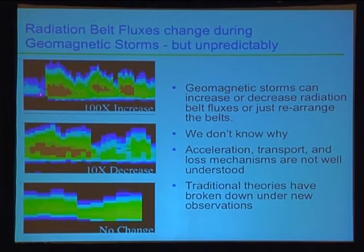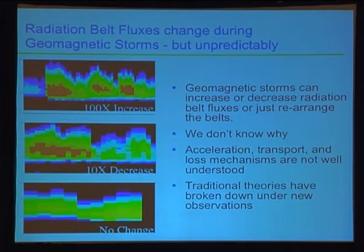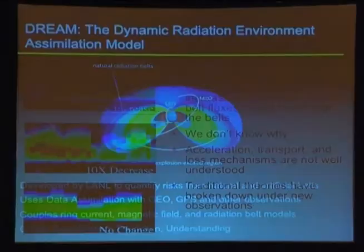We really don't know what's going on or why radiation belts disappear. There are various processes — bonding, acceleration, transport, loss mechanisms — that are not well understood. Traditional theories have broken down under new observations, meaning we have to update these theories. One tool to update those theories is through data assimilation, but let's be careful: data assimilation only gives you an improved model state.